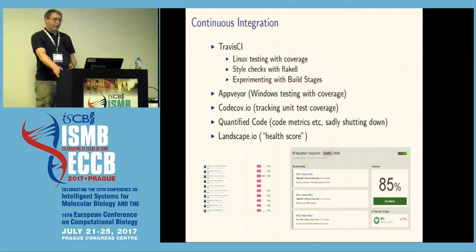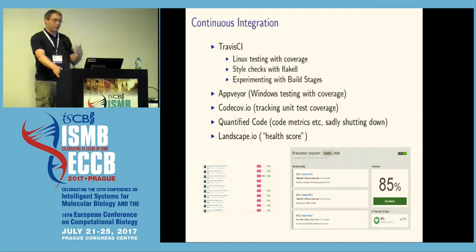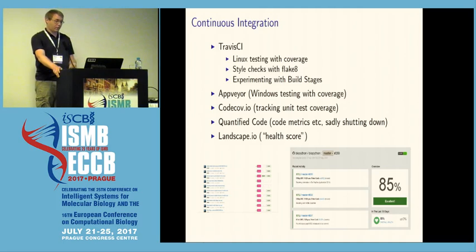We started using continuous integration quite heavily. Like everyone else, we're using Travis CI, doing style checks and build testing. We include other services like AppVeyor for testing Windows packages, which is a very new feature. We also use automatic test coverage with CodeCov — it's a nice ecosystem of services you can use.